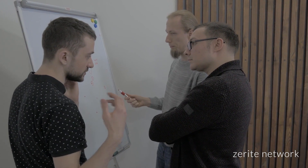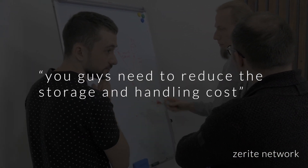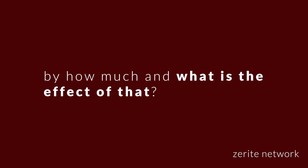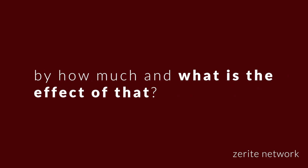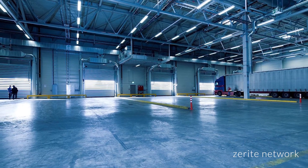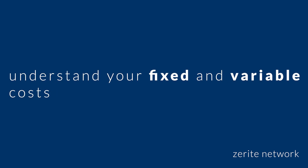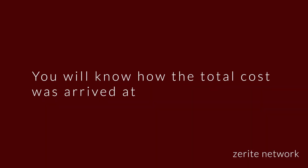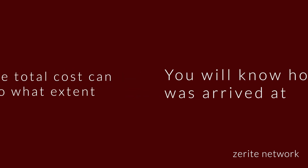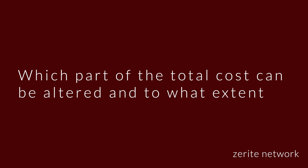Now during the negotiation, you just can't say you guys need to reduce the storage and handling cost, because then the question is by how much and what is the effect of that? You also cannot just suggest that you need to find bigger or smaller space, since the issue of the impact will still come up. What you actually need to do first is to understand your fixed and variable cost. This way, you will know how the total cost was arrived at and which part of the total cost can be altered and to what extent.